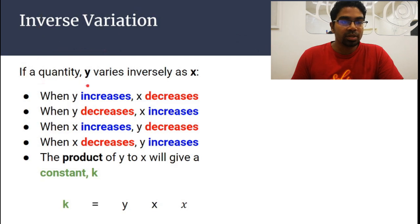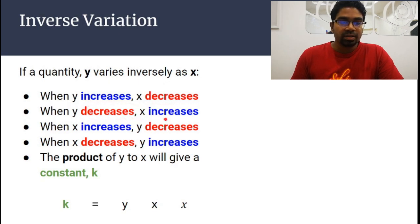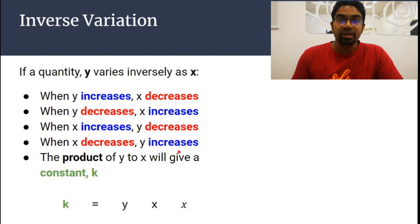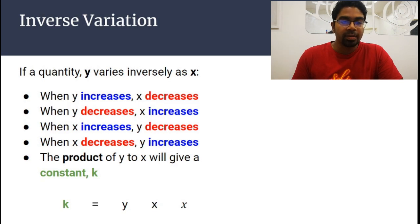If a quantity y varies inversely as x, then when y increases, x will decrease. But when y decreases, x will increase — so the opposite is going on. The same works for x: when x increases, y will decrease; when x decreases, y will increase. The product of y and x will give us a constant k.